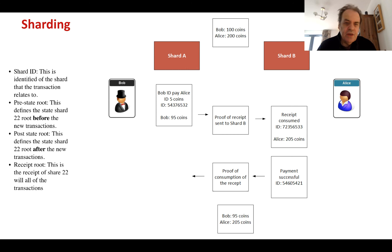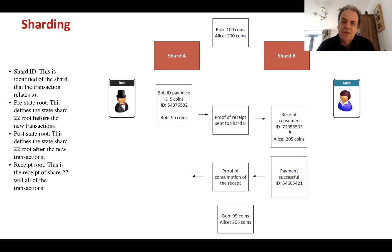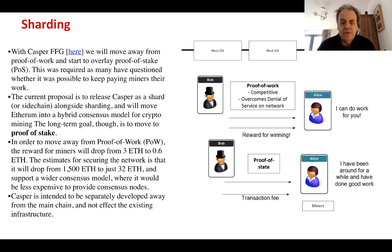For transactions between shards: Bob has 100 coins and Alice has 200 coins, with Alice in one shard and Bob in another. Bob's shard sends a proof of receipt that Bob wants to pay Alice 5 coins, with an ID. That is sent to the other shard, consumed with a certain ID and proven, and then that shard sends a successful payment with a receipt back. So in the global record, Bob now has 95 coins and Alice has 205.